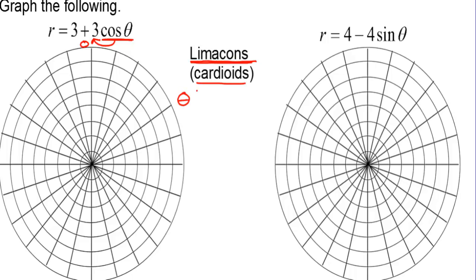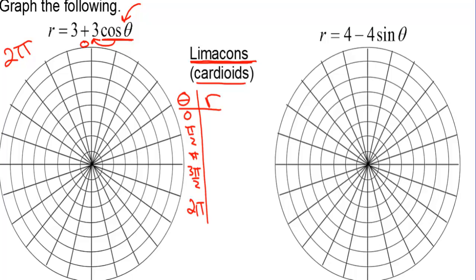Let's take a closer look. We have theta and r, and we're going to count by pi over 2's. These limaçons finish in 2 pi, so if you only graph to pi, you'll only get half the graph. Counting: 0, pi over 2, pi, 3 pi over 2, and 4 pi over 2. Cosine of 0 is 1, so 1 times 3 is 3, and 3 plus 3 is 6. Cosine of pi over 2 is 0, so 0 times 3 is 0, plus 3 is 3. Cosine of pi is negative 1, so we have 3 minus 3 equals 0. That zero tells me it's a cardioid, because it's going to touch the pole. At 3 pi over 2, cosine is 0, so we're at 3, and at 2 pi we're back to 6.